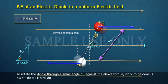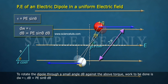To rotate the dipole through a small angle d theta against the above torque, work to be done is dW equals tau d theta equals PE sin theta d theta.